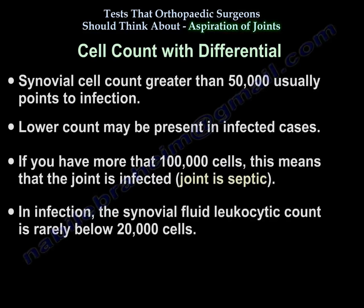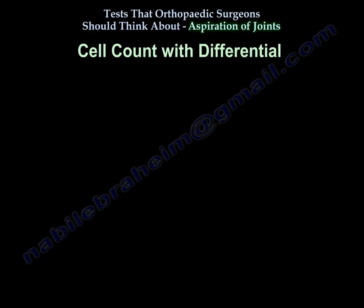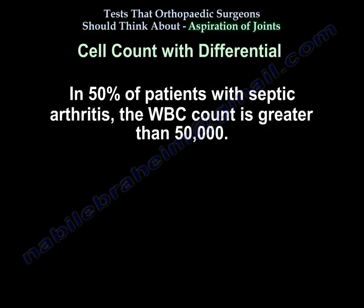Synovial cell count greater than 50,000 usually points to infection; a lower count may be present in infected cases. If you have more than 100,000 cells, the joint is infected. In infection, synovial fluid leukocyte count is rarely below 20,000 cells. In 50 percent of patients with septic arthritis, the WBC count is greater than 50,000.